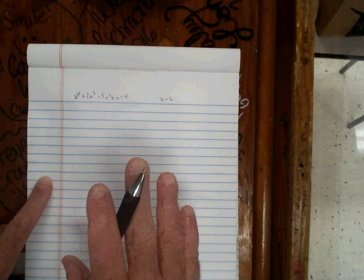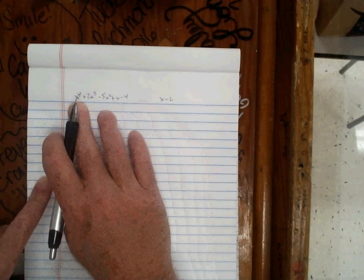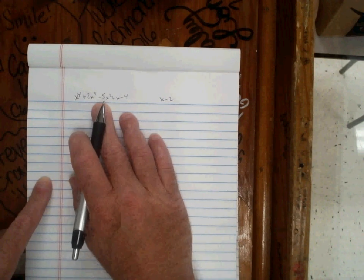In this problem, we're asked to find the remainder when we divide x to the 4th plus 2x cubed minus 5x squared plus x minus 4 by x minus 2.